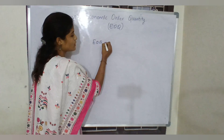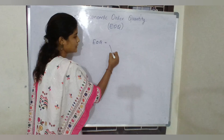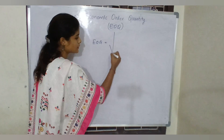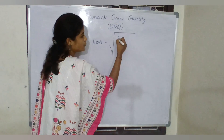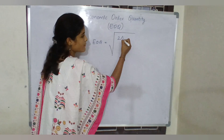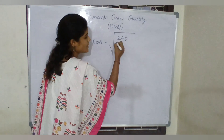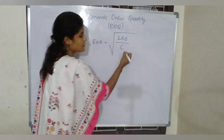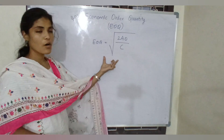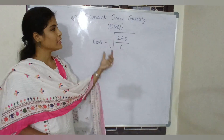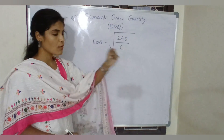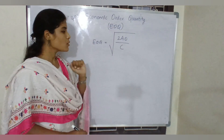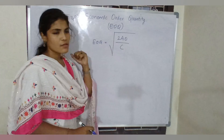EOQ is nothing but the square root of 2AO divided by C. So this is the formula of EOQ — Economic Order Quantity.